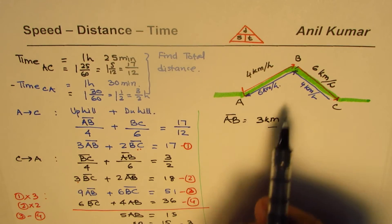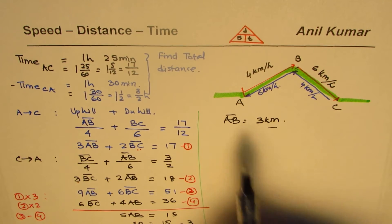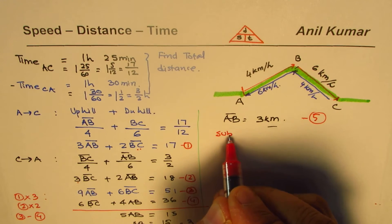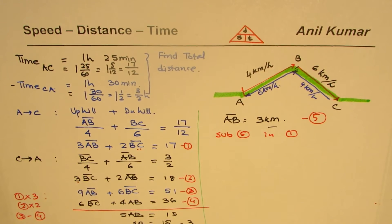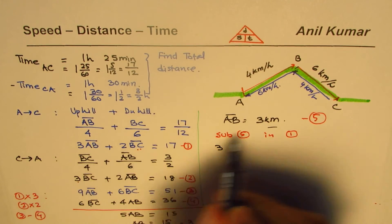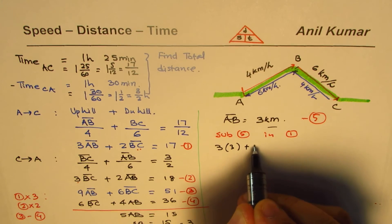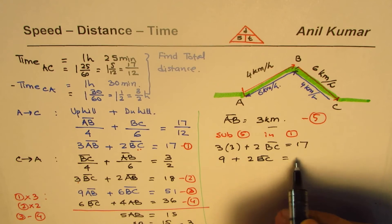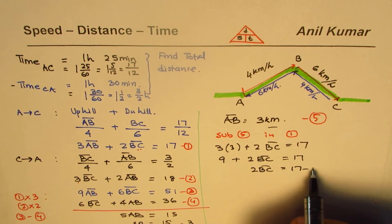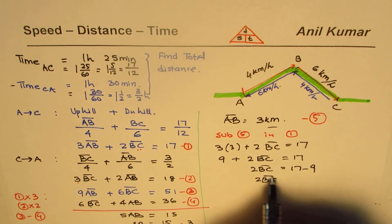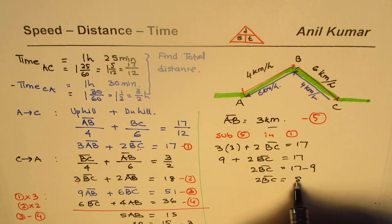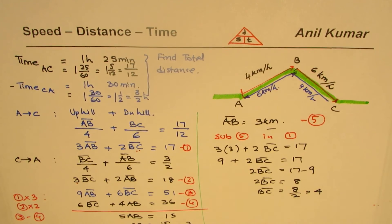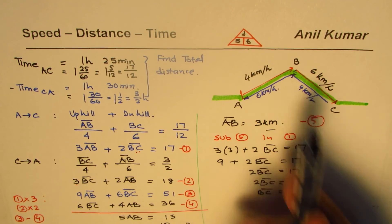Now we can find BC by substituting AB equals 3 into equation 1. We get 3 times 3 plus 2 times BC equals 17, so 9 plus 2BC equals 17. Therefore 2BC equals 8, and BC equals 4. The distance from B to C is 4 kilometers.